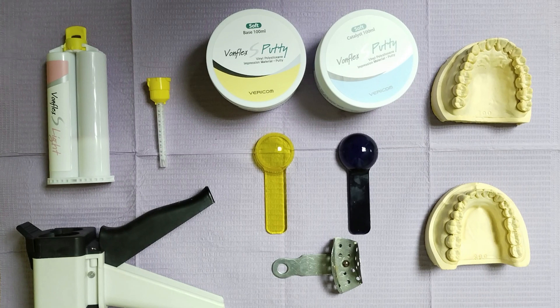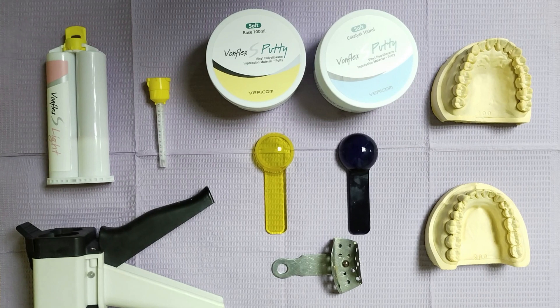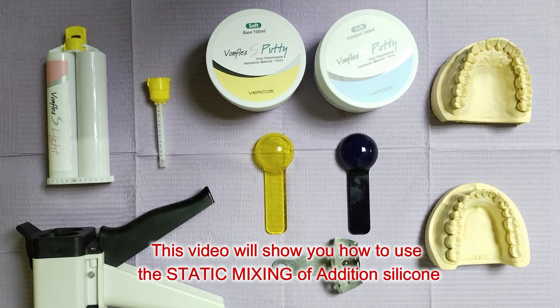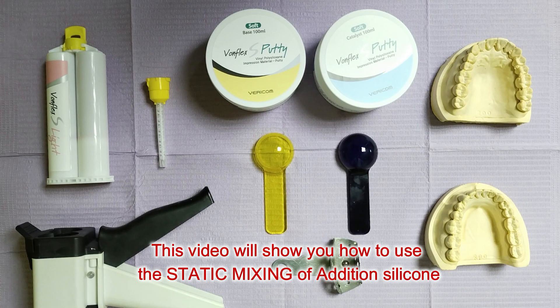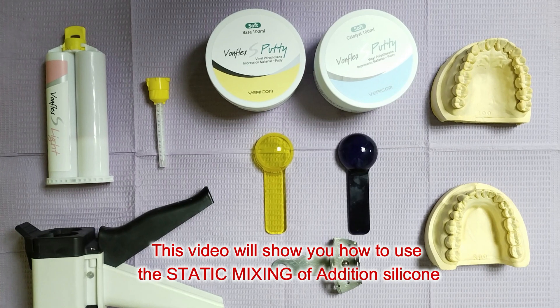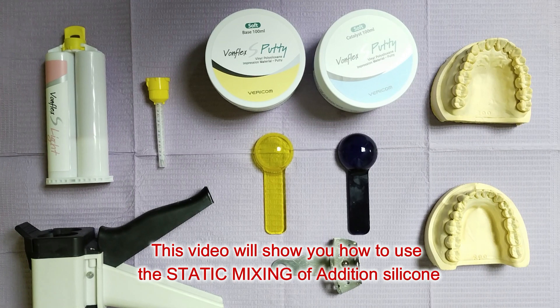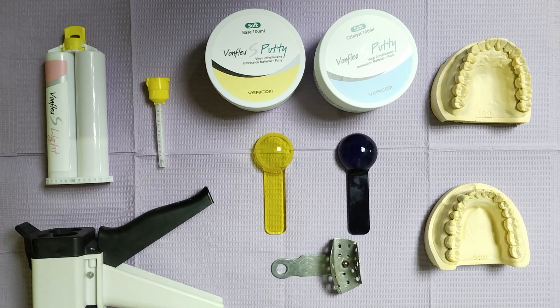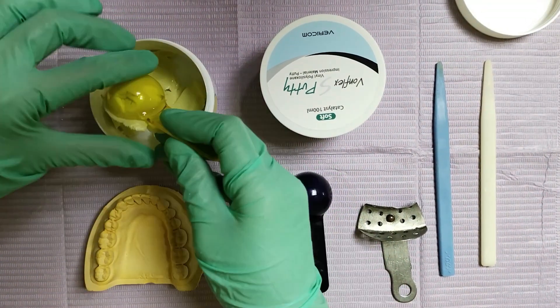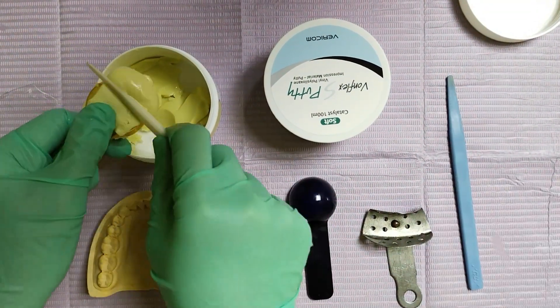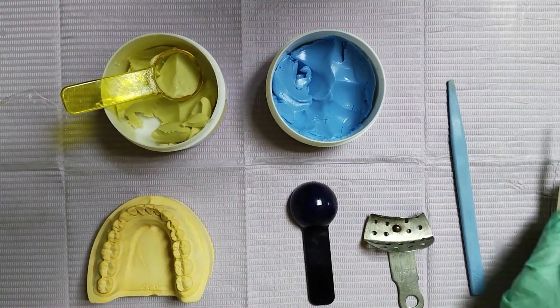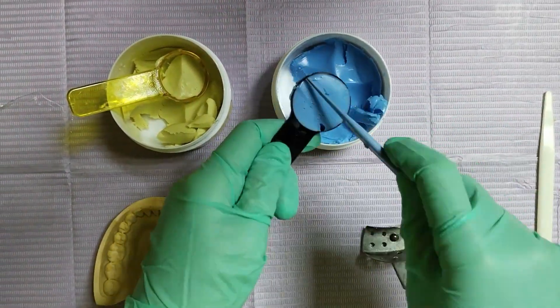For the hand mixing technique, you will use a glass slab or mixing pad and a metal spatula. For the static technique, you will use the impression gun and its disposable tip. Measure out the putty for your tray, which is half of a scoop for our partial impression tray.